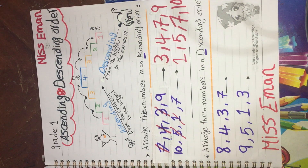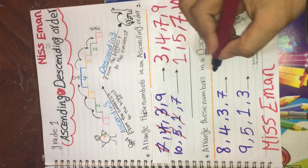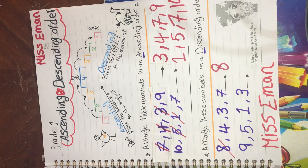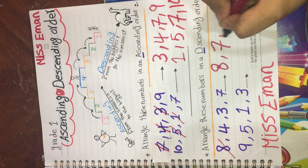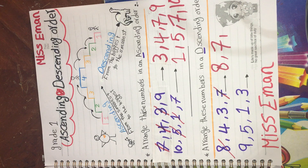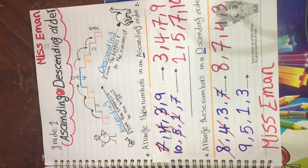Now arrange this number in descending order. Descending starts with D, and dinosaur starts with D. Dinosaur is big, so we start from the biggest number. I have eight, four, three, and seven. The biggest number is eight. We cancel it. Next, from four, three, and seven — the biggest is seven. We cancel it. Now from four and three — the biggest is four. So the descending order is: eight, seven, four, three.